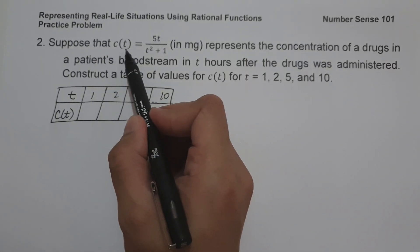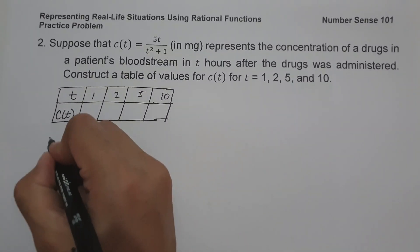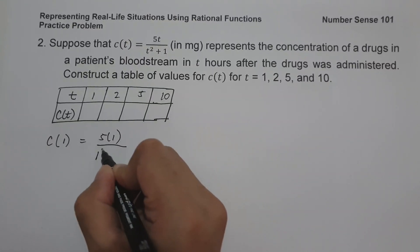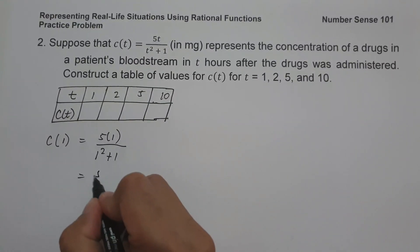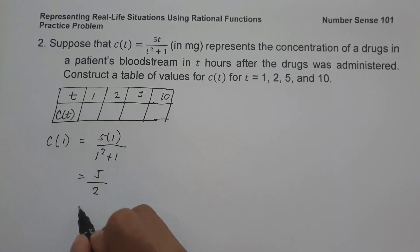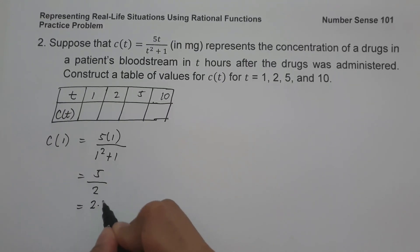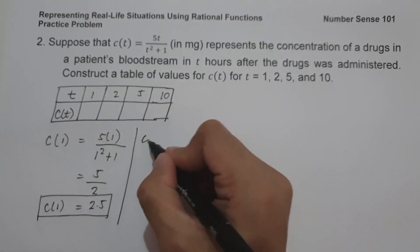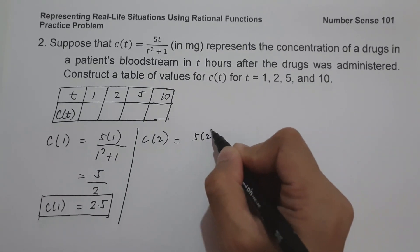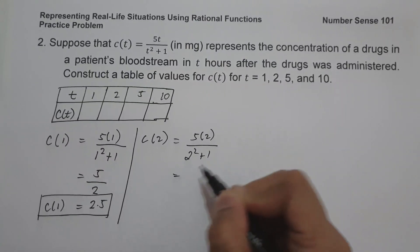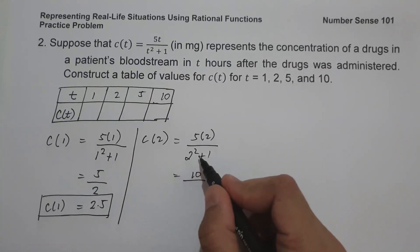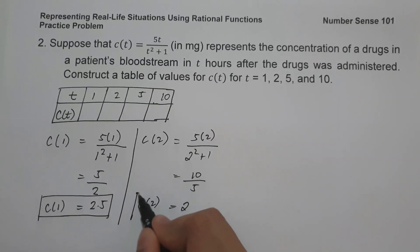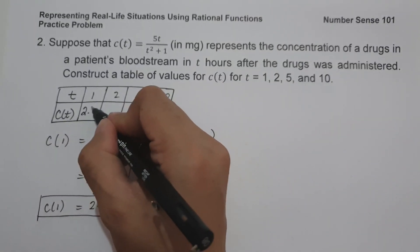Using the formula c(t) = 5t / (t² + 1): when t = 1, c(1) = 5×1 / (1² + 1) = 5/2 = 2.5. When t = 2, c(2) = 5×2 / (2² + 1) = 10/5 = 2. So the table values so far are 2.5 and 2.